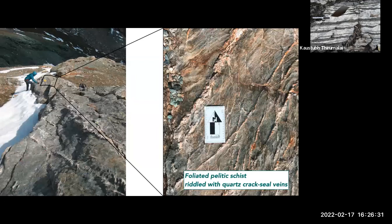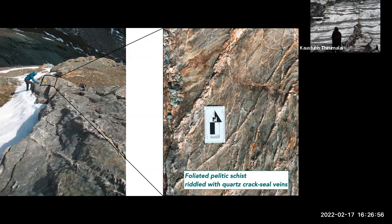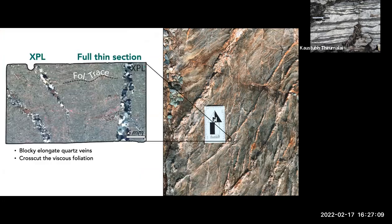I mentioned this mica schist and we're going to zoom in and talk about it in more detail. This is Melody French here for scale — it was cold, there was snow around in September. This is a foliated pelitic schist riddled with quartz crack-seal veins. You can see the trace of the foliation with all of these beautiful quartz crack-seal veins, which form from fracturing and then precipitation of material into the veins. Here is what the microstructures look like — I do a lot of work with microstructures to see mechanistically what's happening within these rocks. You can see blocky elongate quartz veins cross-cutting this viscous foliation.